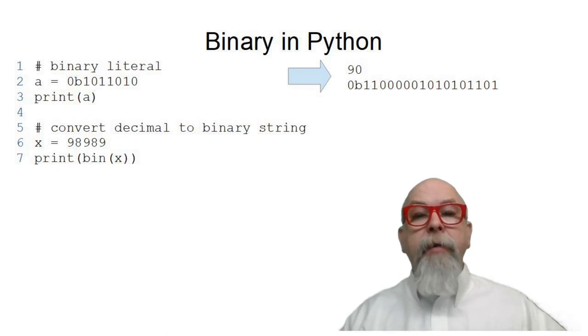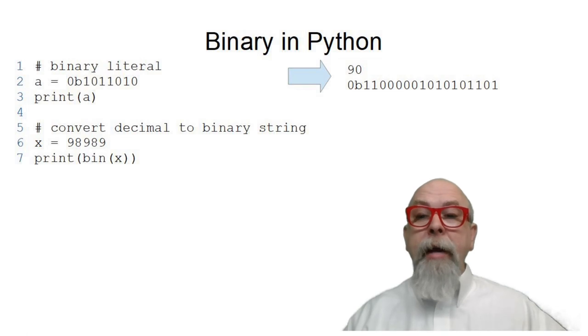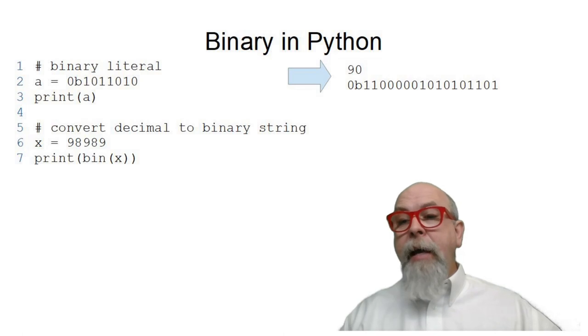Here you can see that I have the binary literal of 1011010. And I have a 0b in front of it that tells Python that this is a binary number and not a decimal number. And so when we print a, we get 90, which would be base 10. We can also convert a decimal number like 98989 to binary by using the bin function. The bin function returns a string. It doesn't return a number. It returns a string with 0b and a series of binary digits. So it makes it really great for outputting numbers in binary.